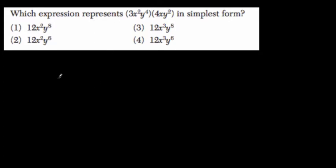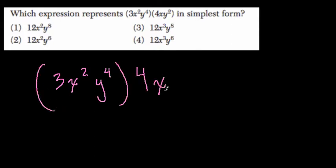Which expression represents, and I'll rewrite it here, 3x squared y to the fourth times 4xy squared in simplest form? Now, this might not be simpler when we finish this, but the idea is you can group like terms to condense. So instead of seeing x multiple times and y multiple times, you'll only see it once.